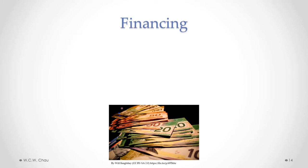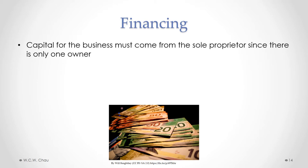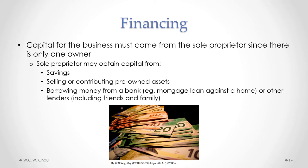Where does the financing for a sole proprietorship come from? Since there is only one owner, the capital for the business has to come from the sole proprietor. Sources include savings, selling or contributing assets already owned, or borrowing money from a lender such as a bank or friends and family. For example, the sole proprietor may already own a house and could get a mortgage against it to obtain a bank loan.